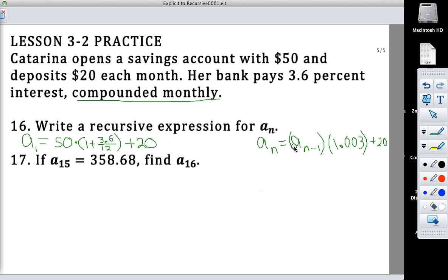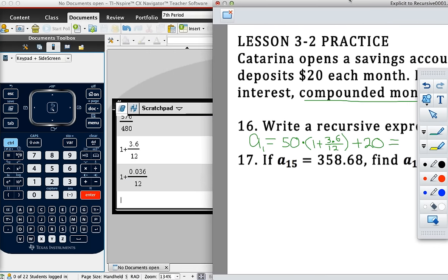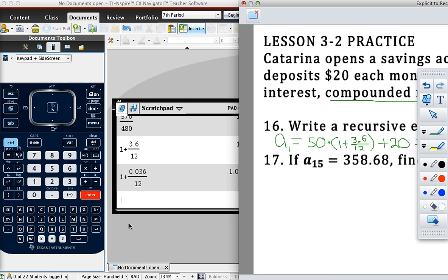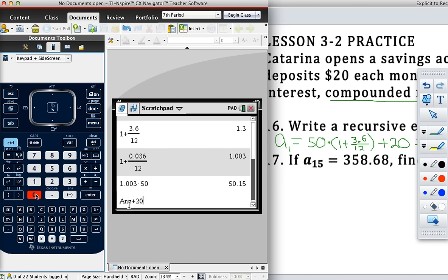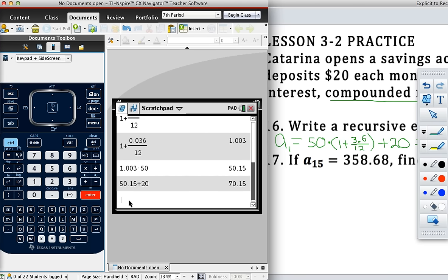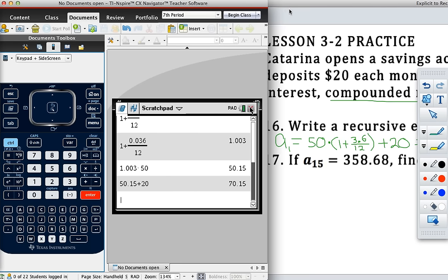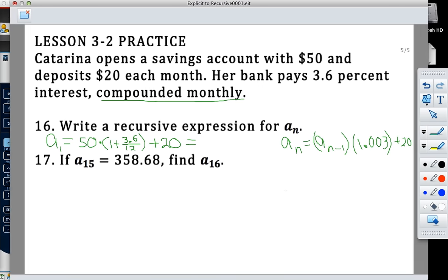So for our recursive formula, our A sub n, we're going to use our previous month's balance. So A sub n minus 1, and that's going to be multiplied by our rate, which was 1.003, times 1.003, and then we're just going to add the $20. So now, we could calculate this all out and find A sub 1, which we probably should do. Let's go ahead and do that real quick, because we should always know what our A sub 1 is. So you have that interest rate, 1.003, times it by our initial amount that we're depositing, and then add $20 to it. So after, for our first month, we have $70.15.